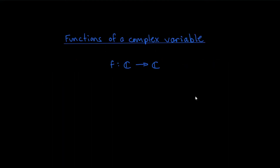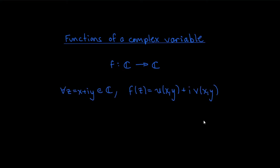When we talk about a function of a complex variable, we just mean a function whose domain is the set of complex numbers. The functions that we're interested in are also going to take complex values, so the codomain is also going to be the set of complex numbers. Functions of a complex variable are just functions from ℂ to ℂ.